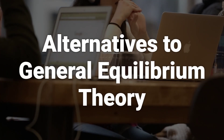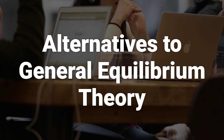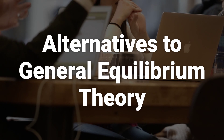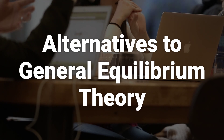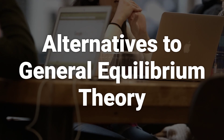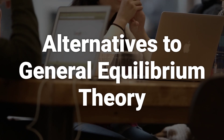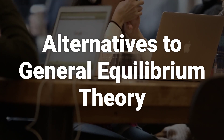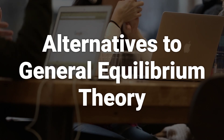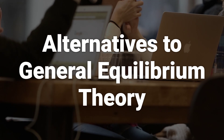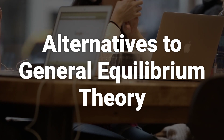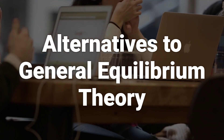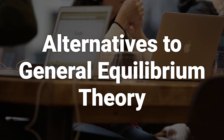Austrian economist Ludwig von Mises developed an alternative to long-run general equilibrium with his so-called evenly rotating economy. This was another imaginary construct and shared some simplifying assumptions with general equilibrium economics: no uncertainty, no monetary institutions, and no disrupting changes in resources or technology.